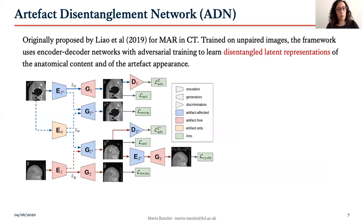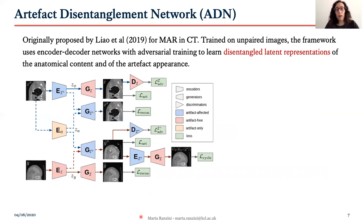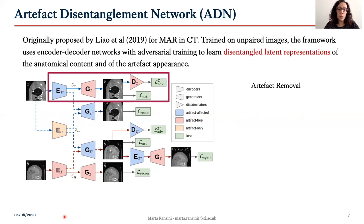Going into a little bit more details about the method, this work builds upon the artifact-disentanglement network recently proposed by Liao for MAR in CT. The key idea is to use a series of encoder-decoder networks coupled with adversarial training in order to learn a latent representation of the data where the artifact is disentangled from the anatomical content. In particular, a corrupted image is input into two encoders: the first aiming to learn the anatomy and the second the artifact. In the artifact removal pathway, the anatomical latent codes are decoded in a generator that learns to reconstruct clean CTs, and a discriminator helps generate realistic clean CTs.